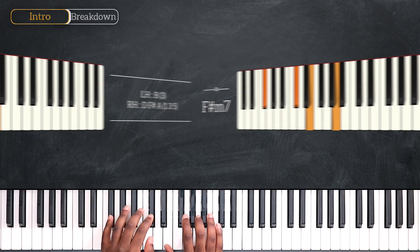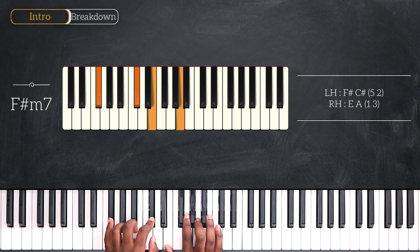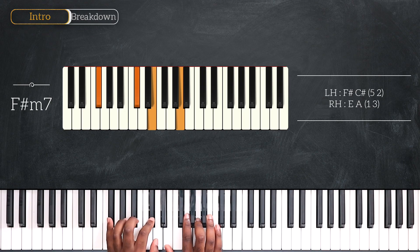And then we have the sixth chord playing F sharp minor 7. F sharp, C sharp, E and A.